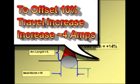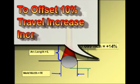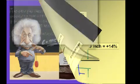Or, if you want to make welds 10% faster, to offset the penetration loss, you only need to increase current about 2.5%, or in this case, about 4 amps.